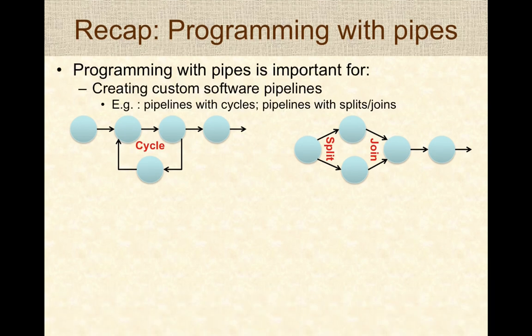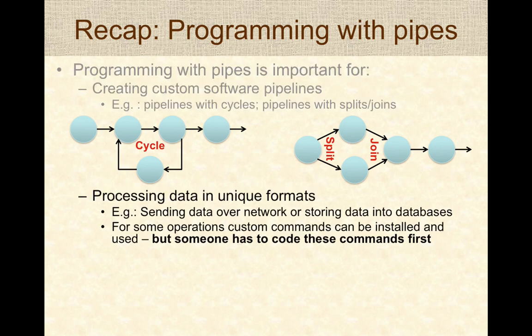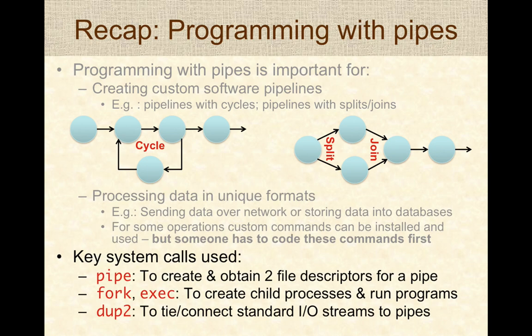Let's do a recap on pipes. Programming with pipes is important to create custom software pipelines — sophisticated pipelines that you typically will not be able to create via the shell. Setting up sophisticated pipelines or creating your own pipes enables processing data in unique formats; you could send data over a network, store it into databases, or do custom operations with anonymous pipes. In this presentation, we used a few key system calls: pipe() to create file descriptors for the read and write ends, fork and exec to create child processes and run other programs, and dup2 to tie or connect standard input-output streams to pipes appropriately.